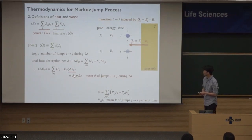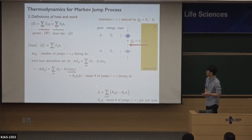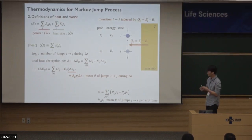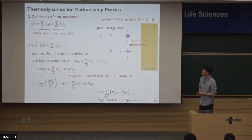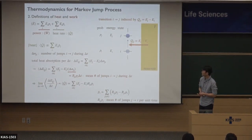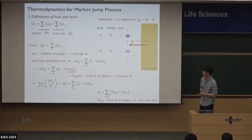R_ji times P_i is the average number of jumps from I to J per unit time. By multiplying delta T, this means the average number of jumps from I to J during delta T. By dividing by delta T and taking the limit as delta T goes to zero, it means the heat rate. From this, we can write the heat rate in this form.